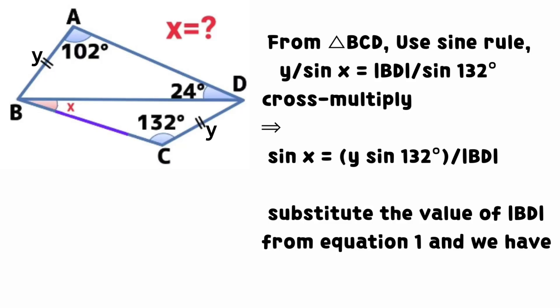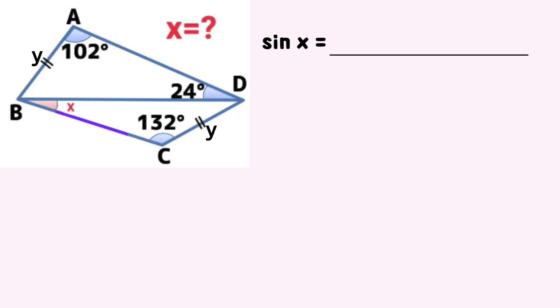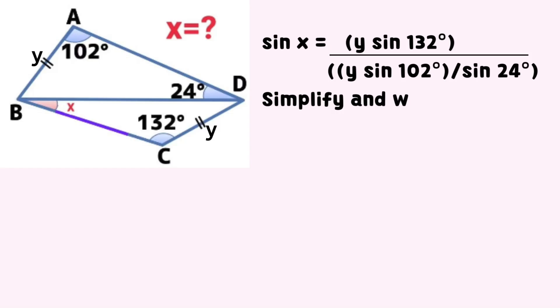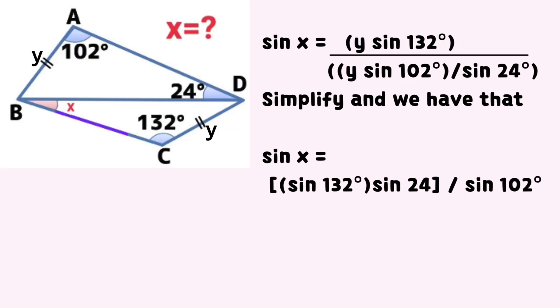Substitute the value of the length of line BD obtained earlier from equation 1. Simplify this equation and we have that sine x equals the product of sine 132 degrees and sine 24 degrees all divided by sine 102 degrees.